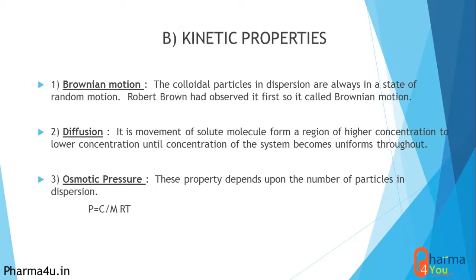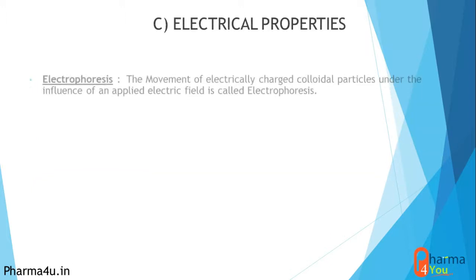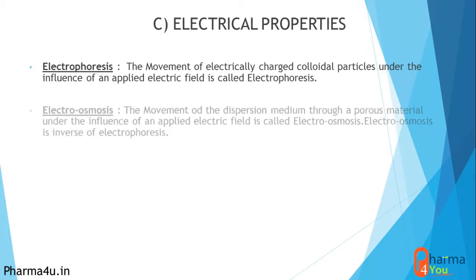Osmotic pressure depends on the number of particles in dispersion. It is denoted as P = (C/M) × R × T. Viscosity depends on the shape of the colloidal particle — if particles are spherical, viscosity is low; if they are elongated in length or height, viscosity may be higher.